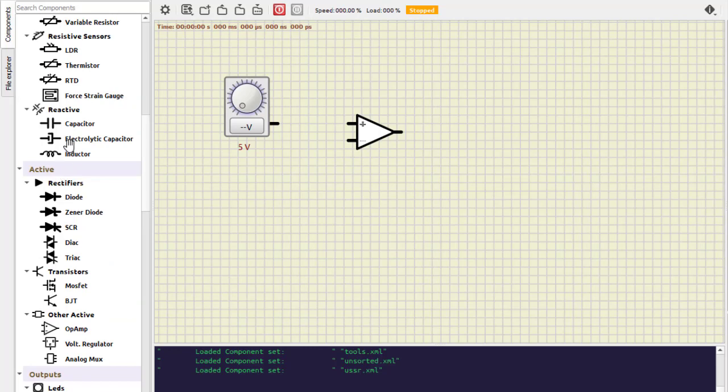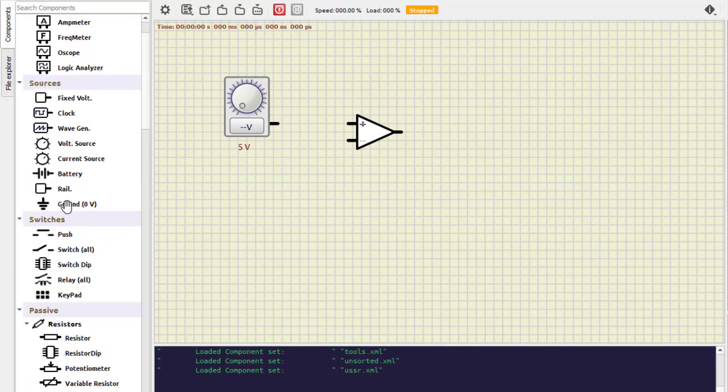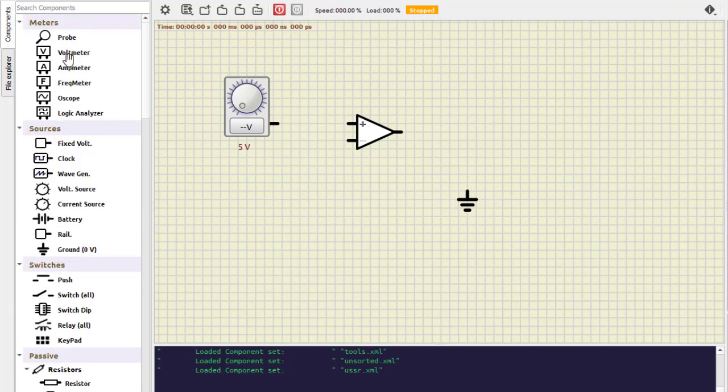Then we need a ground. So here we have the ground. Then we need a voltmeter. This is a voltmeter.